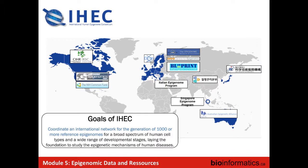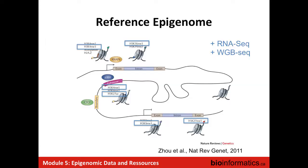As part of the reference epigenome consortium, there's systematic profiling of histone marks — two that correspond to transcribed regions, two associated with enhancer regions, and two associated with repressed regions in the genome. On top of that, there's RNA-seq data and whole genome bisulfite sequencing data. Together, this really gives a good sense of the epigenetic state of a given cell type.